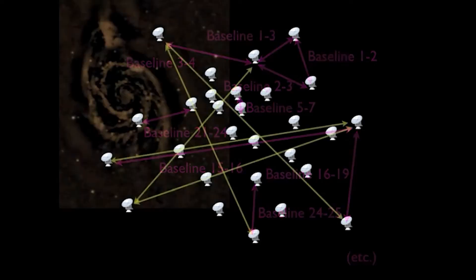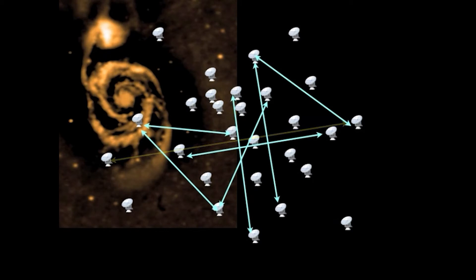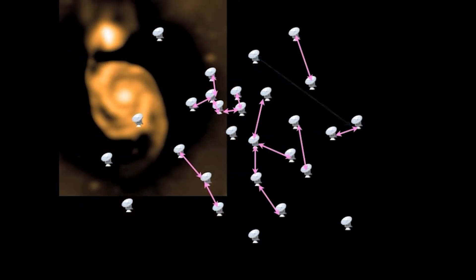Bigger baselines sample the smallest scale structures, intermediate baselines sample the intermediate size scale structures, and the smallest baselines sample the largest scale structure.